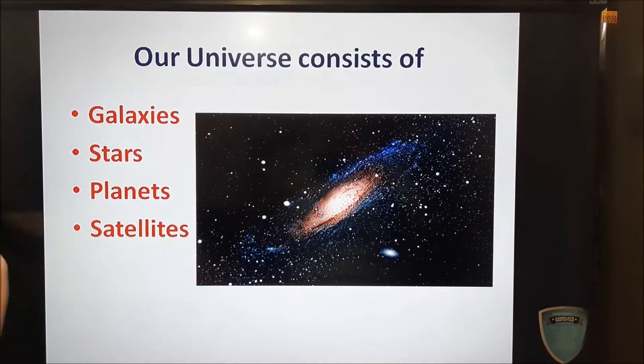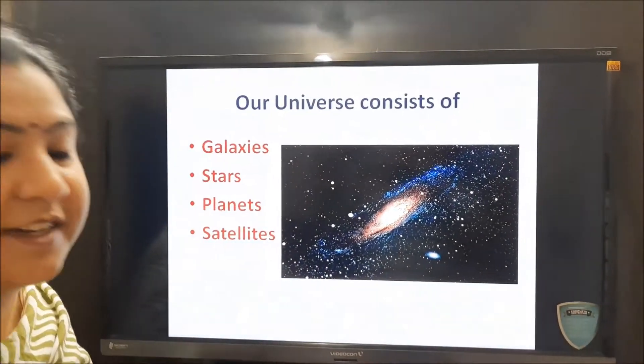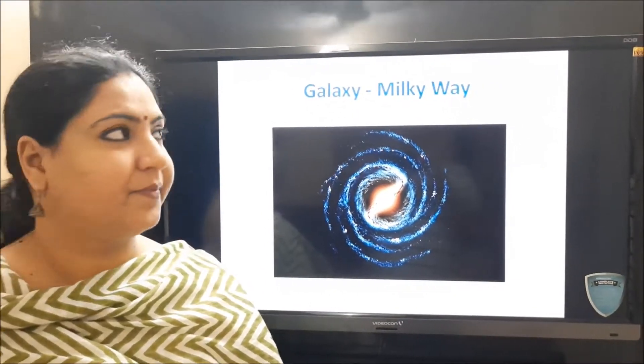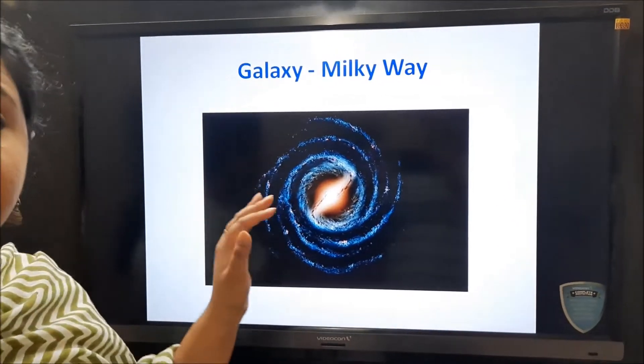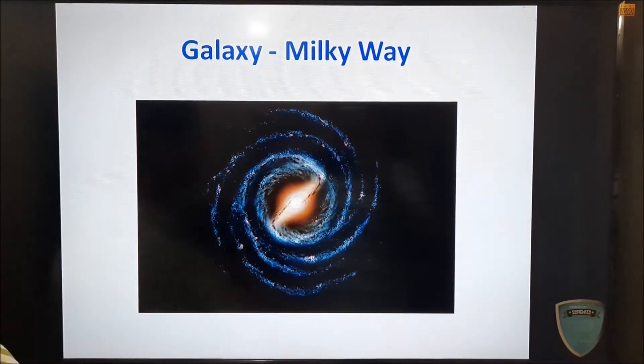Now a universe consists of galaxies, stars, planets and satellites. Let us first understand what a galaxy is. Now there are many galaxies in the universe. Ours is the Milky Way.